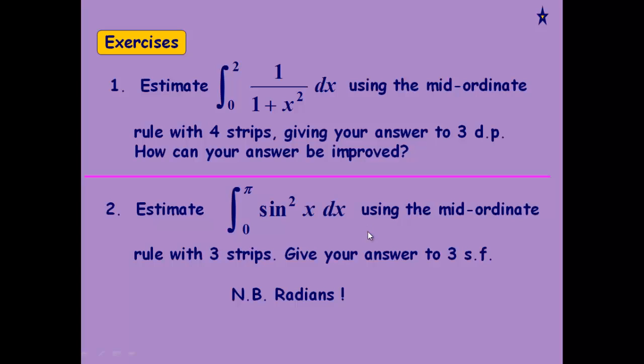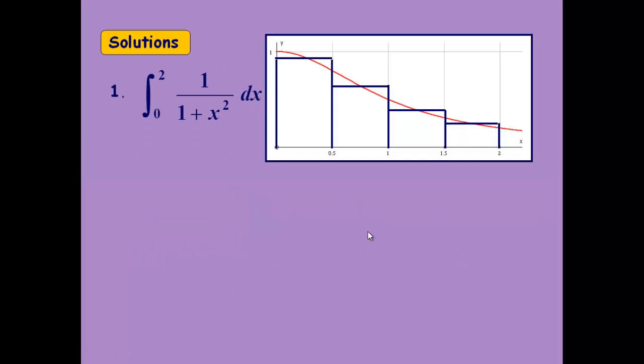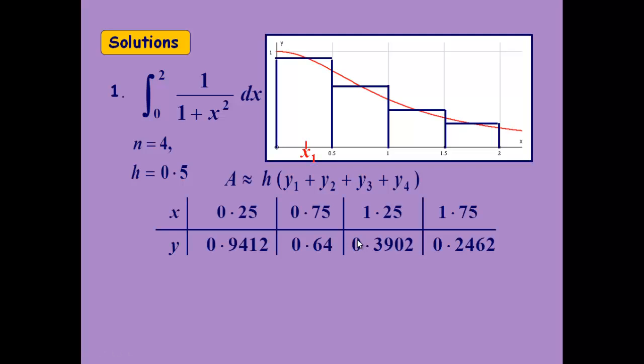OK, so here's the answers. So what the first one looks like, we've got width of a half. This is the table of values with the different x values. Put the x values in here to work out the y values. And then it's just a half times the sum of them. So we should have got 1.109.